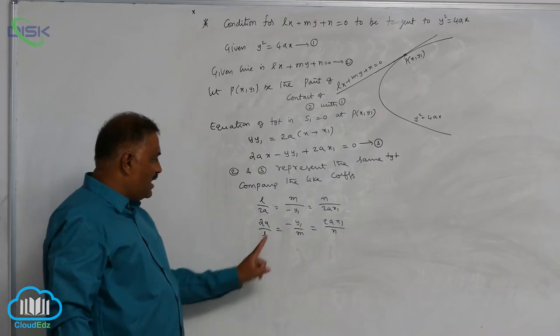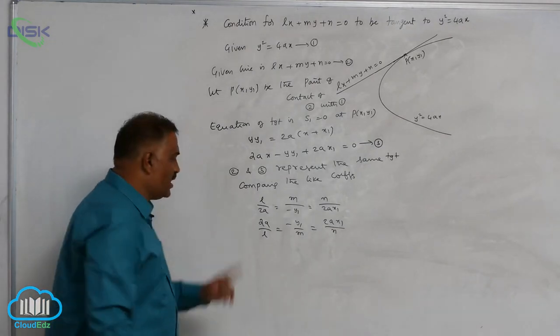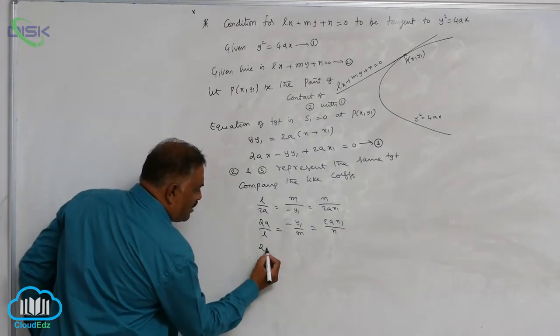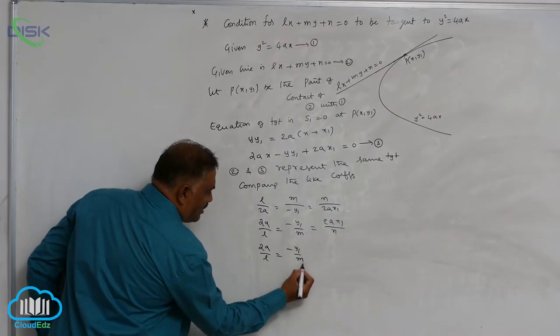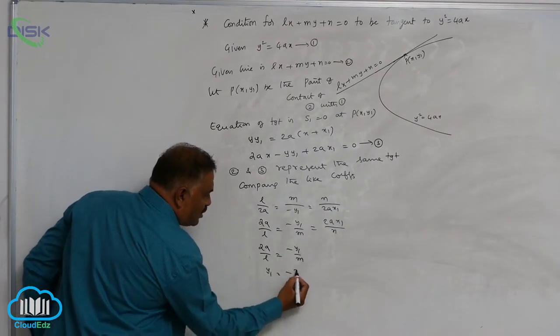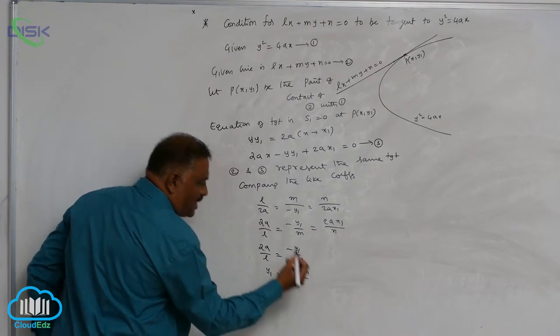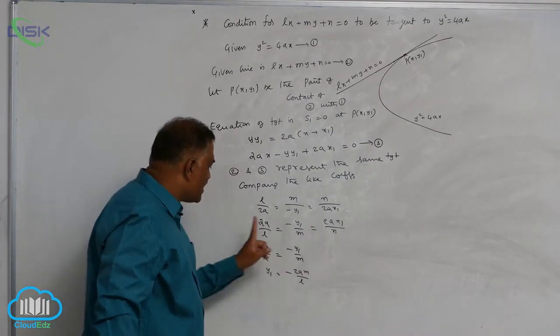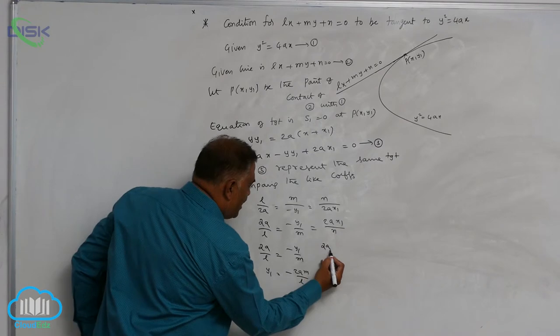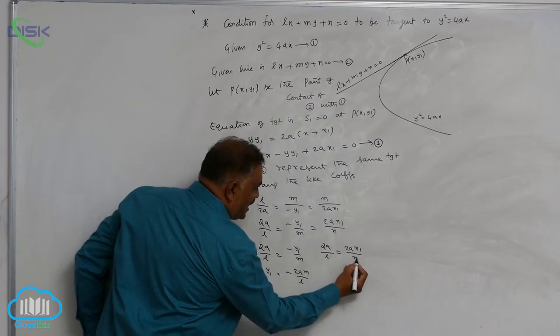You can see very clearly. Take first two: 2A by L is equal to minus y1 by M, so y1 is equal to minus 2AM by L. Take first and last: 2A by L is equal to 2Ax1 by N.